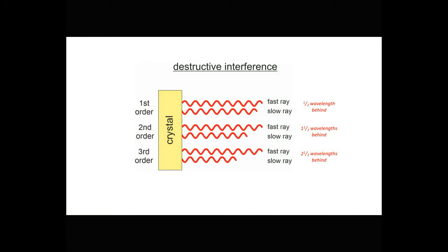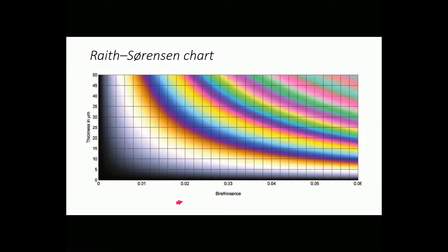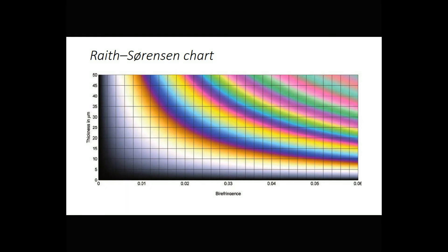So we may see different order interference colors that appear in almost the same hues, but they're different because the number of wavelengths between the slow and the fast rays are different. Retardation depends on birefringence, which is the difference in refractive index for the slow and fast rays, and it also depends on sample thickness. This chart shows birefringence across the bottom and thickness vertically — it's called a Raith-Sorenson chart. Retardation increases diagonally from zero in the bottom left corner to about 3,000 nanometers in the upper right.